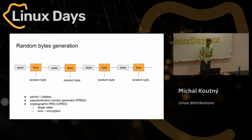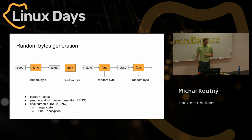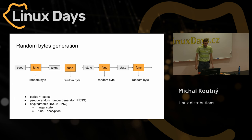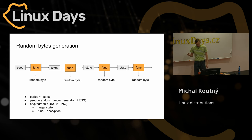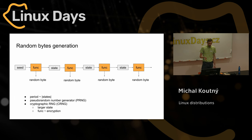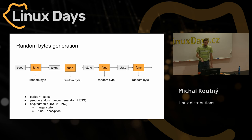Of course, the function is deterministic, so it depends on how random the state actually is. If we have a limited set of possible states and we ever get into the same state, we have the same sequence of random bytes. So there's a period of the generator depending on the number of elements in the set of states. Sometimes we also distinguish a pseudorandom generator from one with special cryptographic requirements, where the set of states is larger and the function is more complicated so that the internal state cannot be guessed from the output.